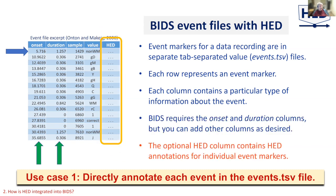For use case one, which is annotating individual events, you can use an optional HED column. If you use a HED column in your event file, it can only contain HED annotations. To annotate individual events, you simply place HED annotations next to the rows of the events that you want to annotate.